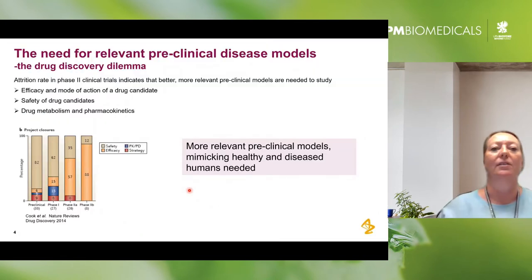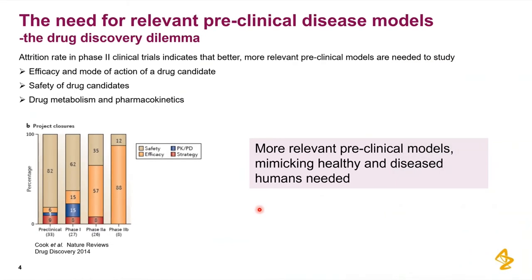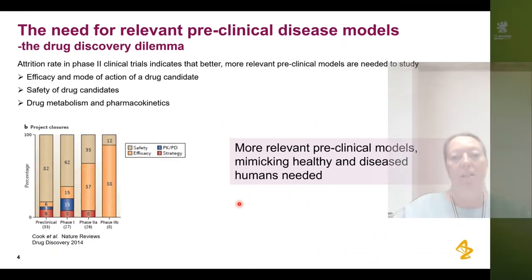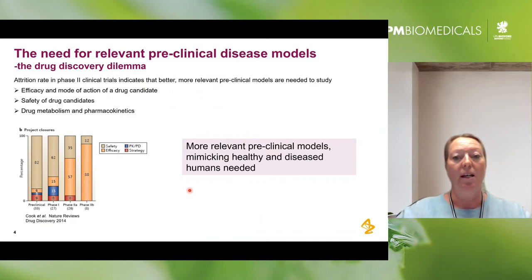I work at AstraZeneca, a pharma company. Within drug discovery and development, we have the dilemma of attrition of our drug candidates during all phases of development. In this graph from 2014, a lot of the attrition was due to safety or efficacy, but in the late 90s we also had a lot of attrition due to PKPD properties. This triggers us to develop more relevant preclinical models that can capture these properties, and these models should preferably mimic both healthy and diseased humans.